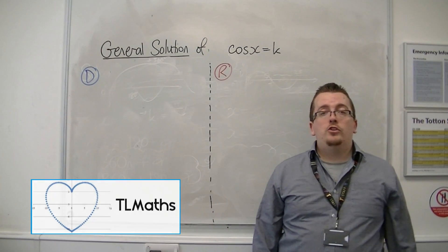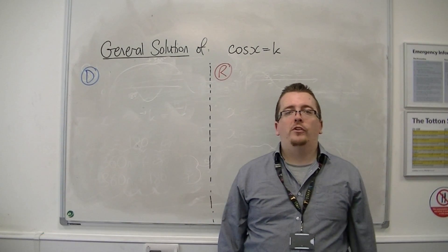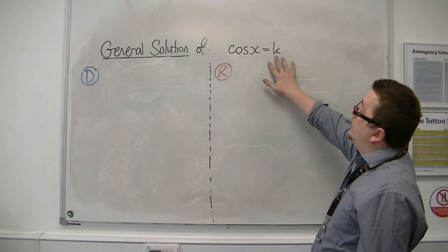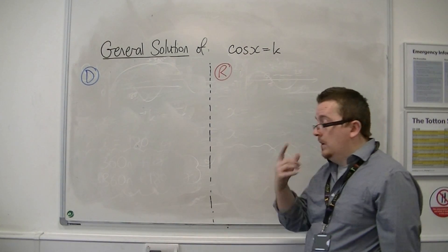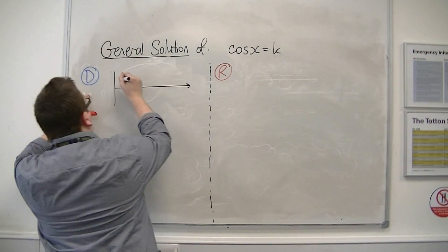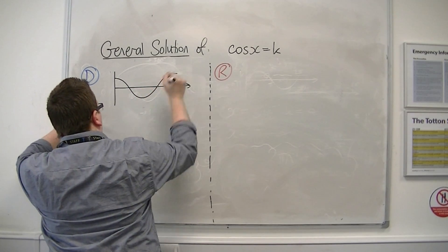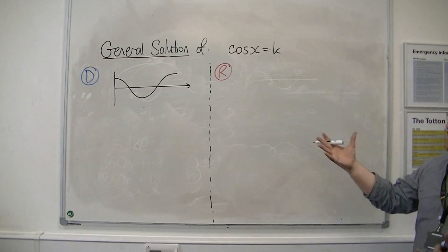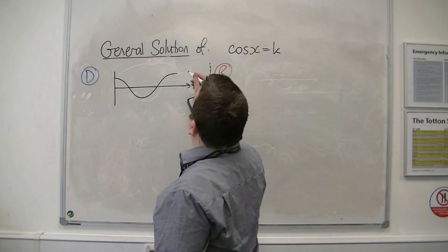So we've looked at the general solution for sine, let's look at the general solution for cosine. We're going to look at the general solution of cosine x equals k. Sketching the graph in degrees first, we have this between 0 and 360.